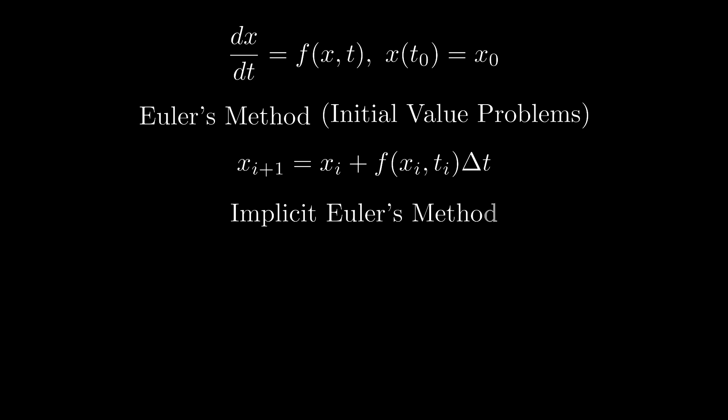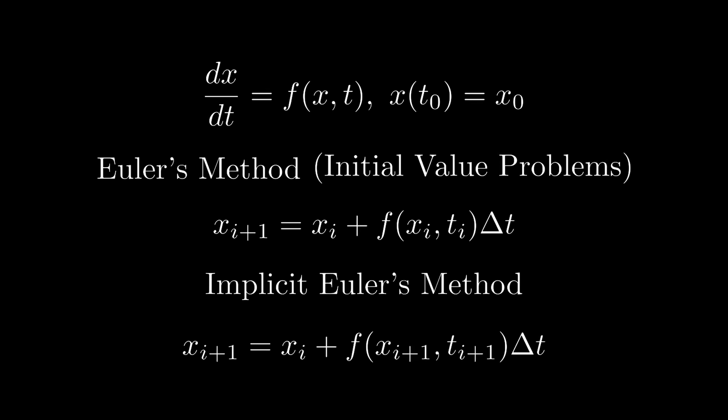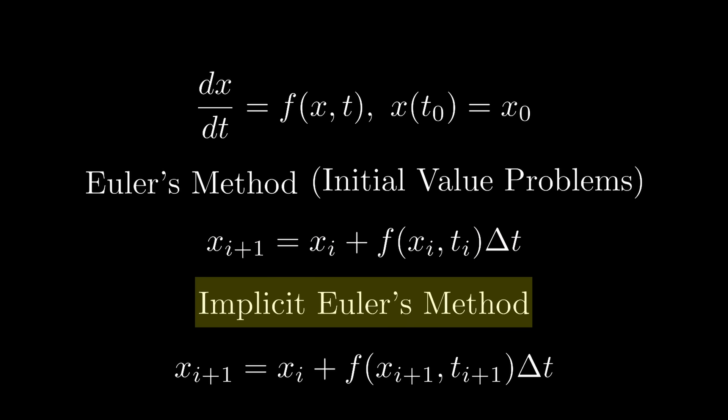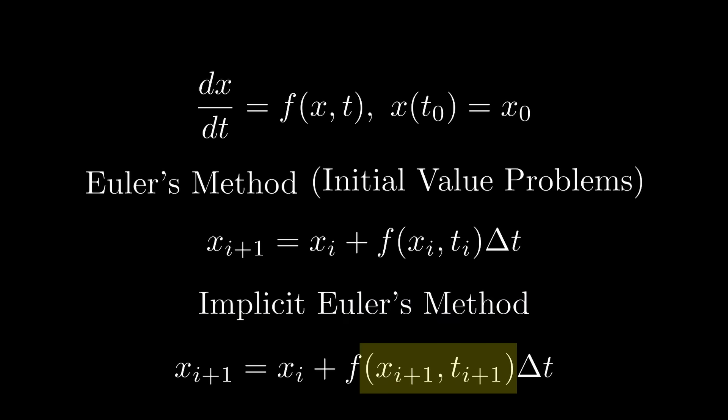Here's a small tweak we can make to Euler's method that might solve those. With Euler's method, we calculate the next position x_{i+1} at the next time t_{i+1} using the information we know at xᵢ, tᵢ. We can instead write a sort of implicit Euler's method—change the formula slightly by replacing i with i+1 in our function calculation.